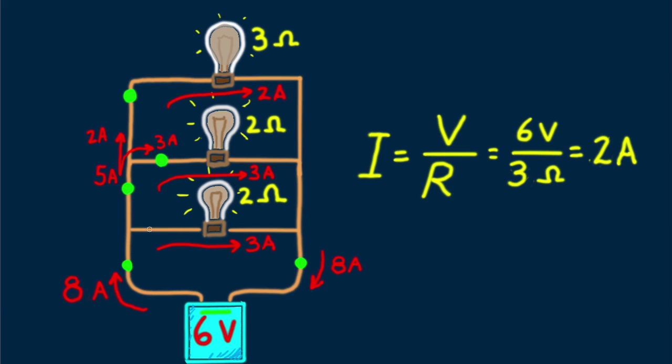It's like buses leaving a bus terminal that branches into 3 streets. If 8 buses leave the terminal and peel off into parallel streets, how many return to the terminal for refueling? All 8. So it is with electric current.